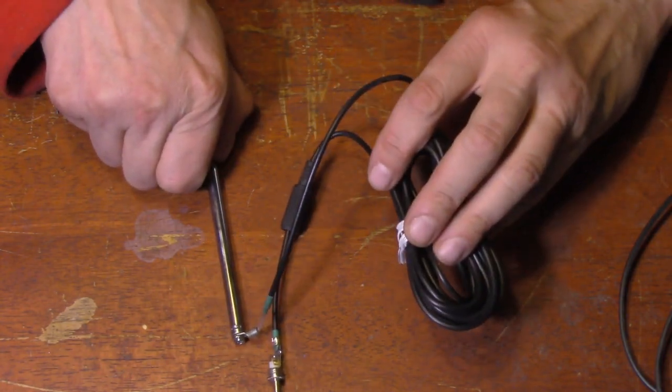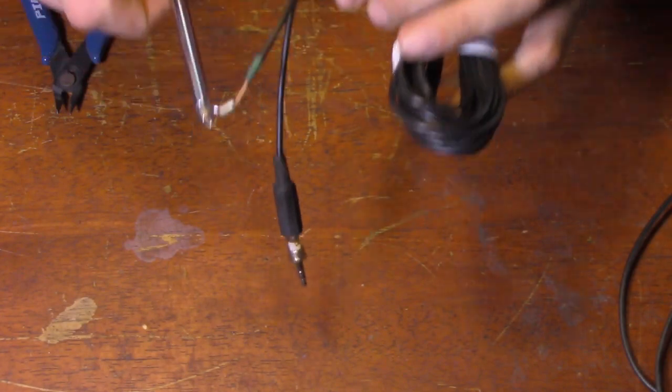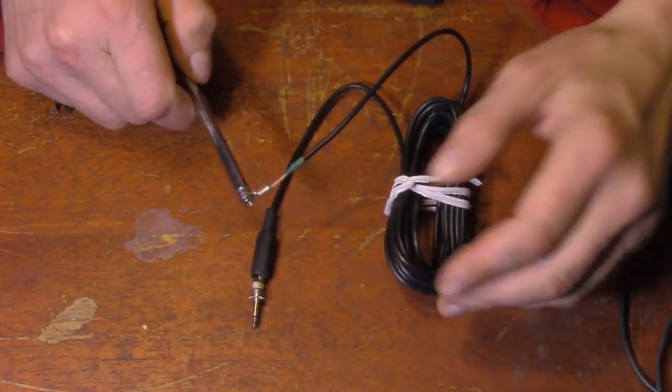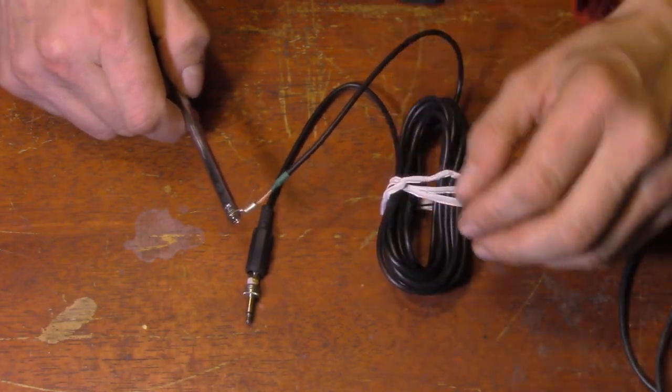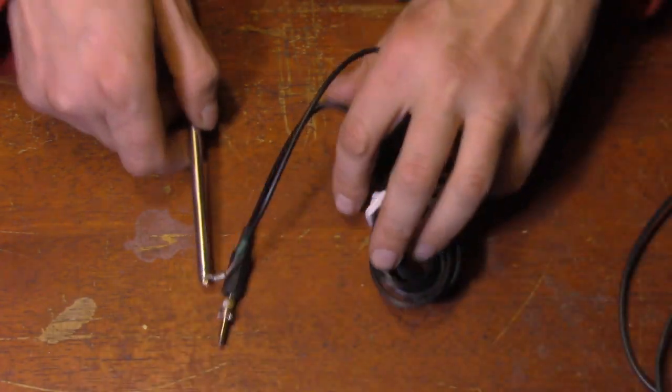I'm going to set this out of the way and show you what you need to do to the coax. Then we'll come back to it. I'm not going to solder this on camera, a little difficult. I don't want the fumes getting up on the lens. But you will understand how to do this by the time this video is over.